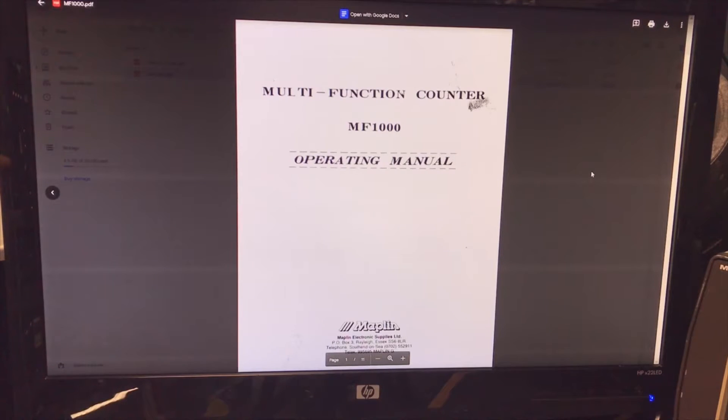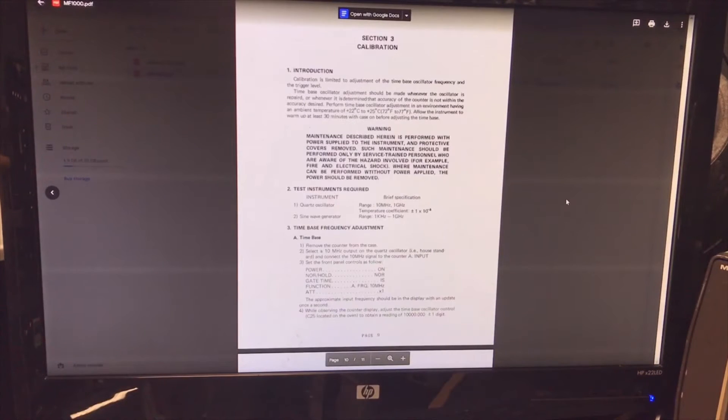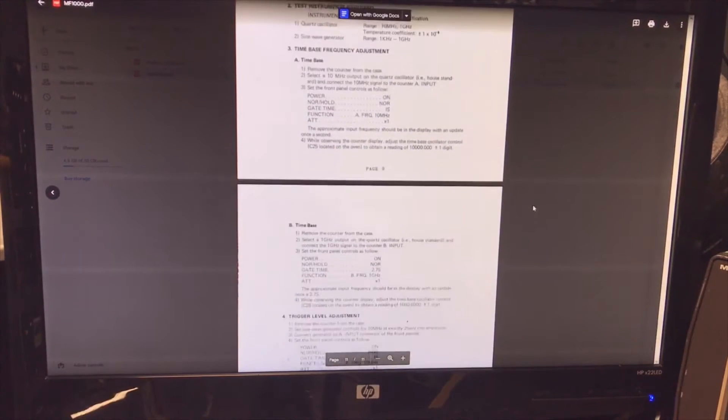That was the instruction manual. Here I have the MF 1000, it's from Maplin, and this one actually does have the calibration section also here. So we will just follow that.